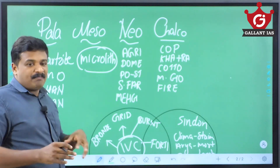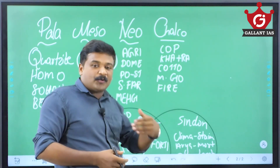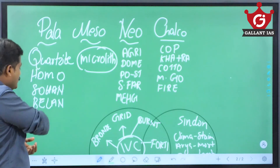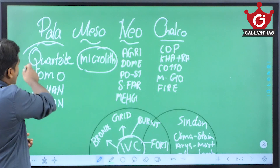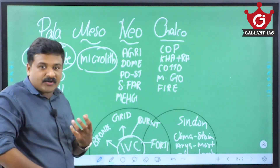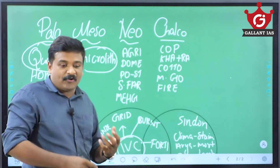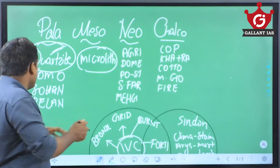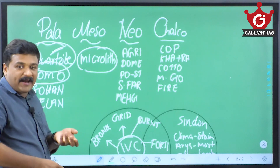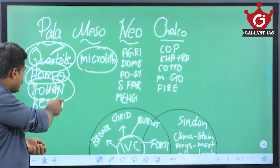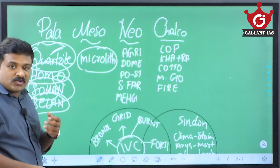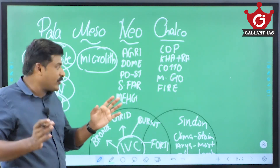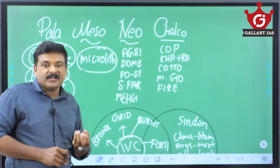There are some important keywords I am sharing with you — this is an approach of understanding history through keywords. For paleolithic culture, one key term is quartzite — this is the kind of hard rock used by paleolithic men for making stone tools, so they are also called quartzite men. Homo sapiens made their appearance in the upper paleolithic age. This culture is reflected in the Sohan Valley, Belan Valley, Narmada, and Bhimbetka — these are different sites of paleolithic culture.